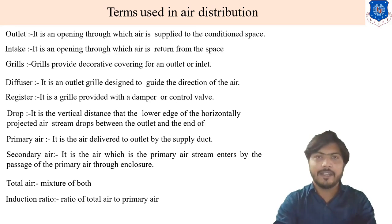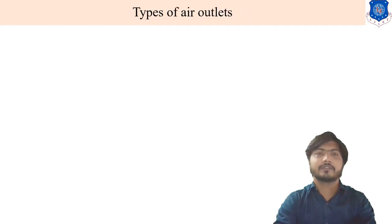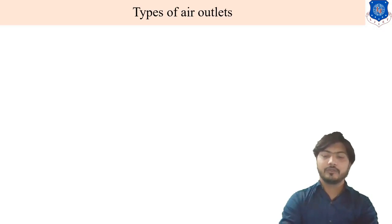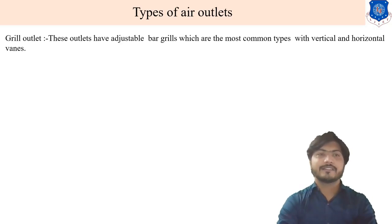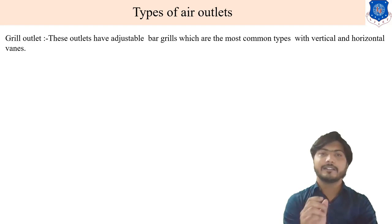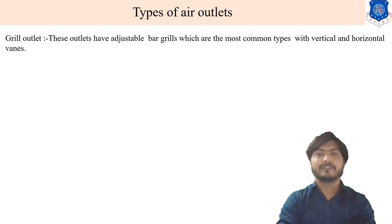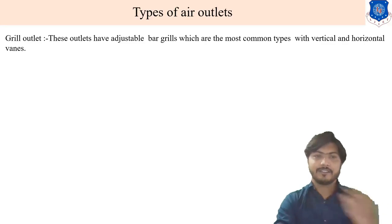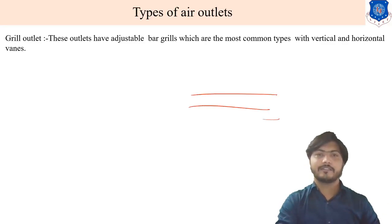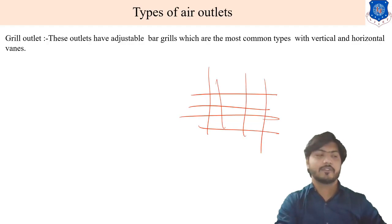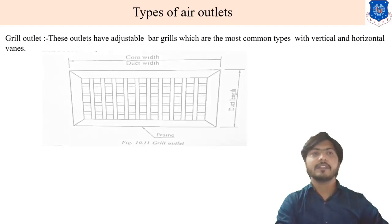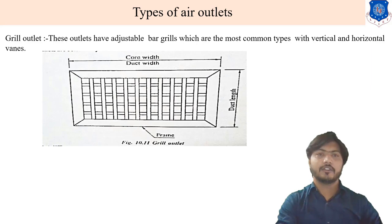The ratio of total air to the primary air is known as the induction ratio. Next is types of air outlet. Which type of outlet is provided for an air conditioning system? First is the grilled outlet. This outlet has an adjustable bar grill, which is the most common type, with vertical or horizontal vents. This is a grill attached to a cold duct with a frame, like a window.